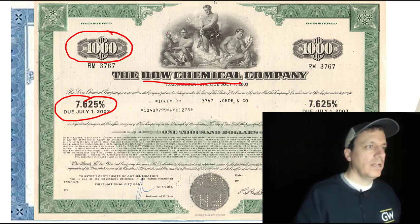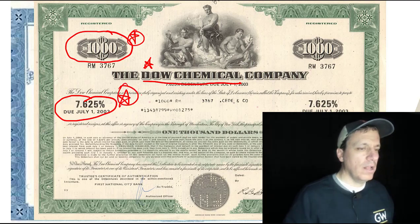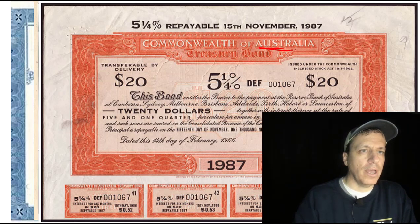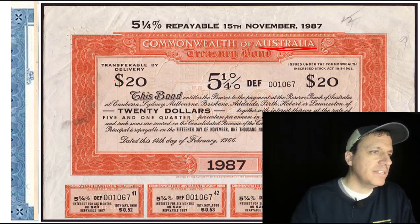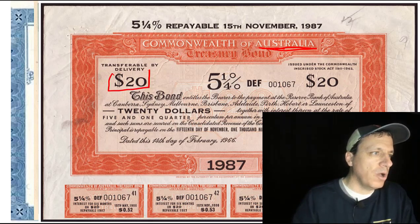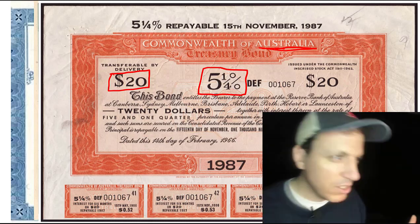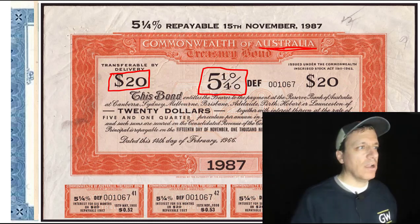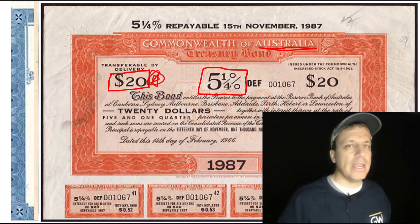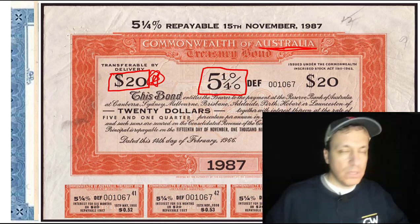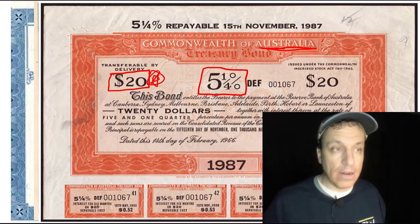There's this feature where this is the bond company, there is the face value, and then there's this coupon rate. This other bond is for the Commonwealth of Australia. It has a face value, and that percentage is the coupon payment — the amount that's paid. The face value tells you the amount to be paid at the end of the term of the bond. At the end of however many years, this amount — in this case $20 — will be paid on this bond.